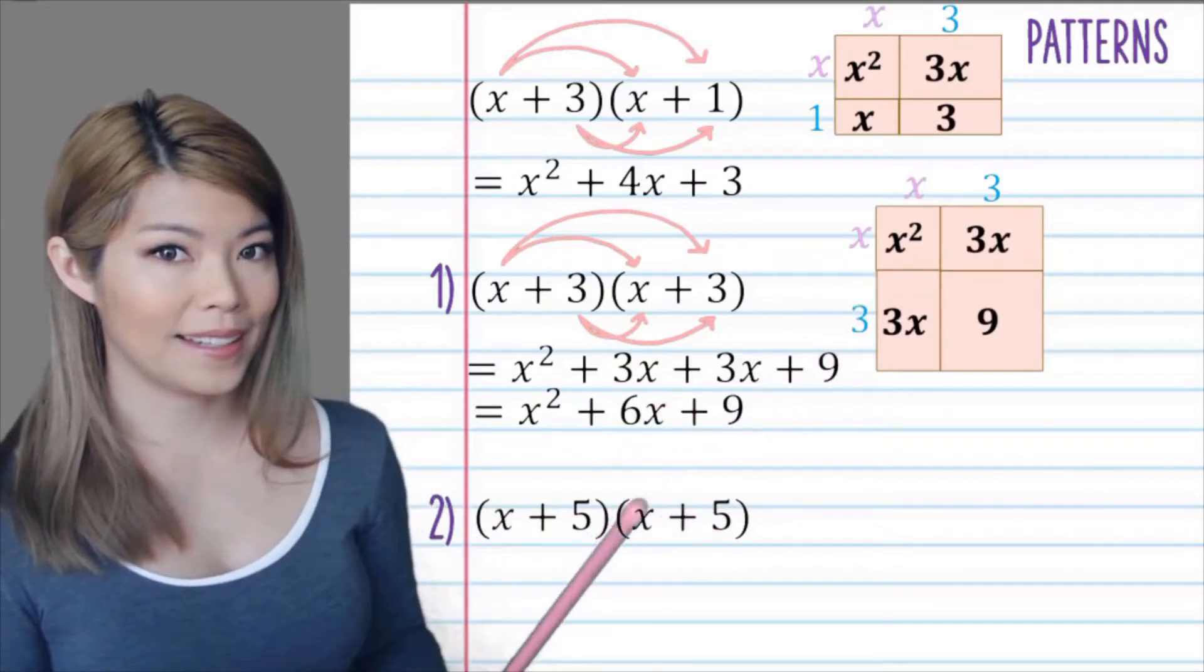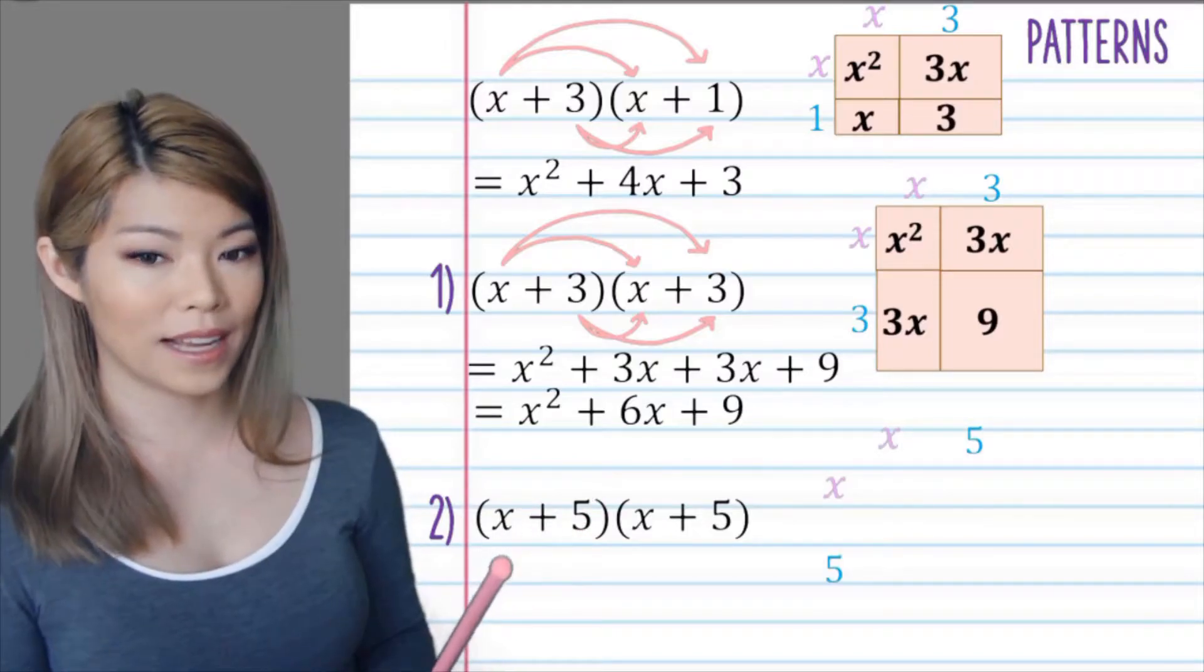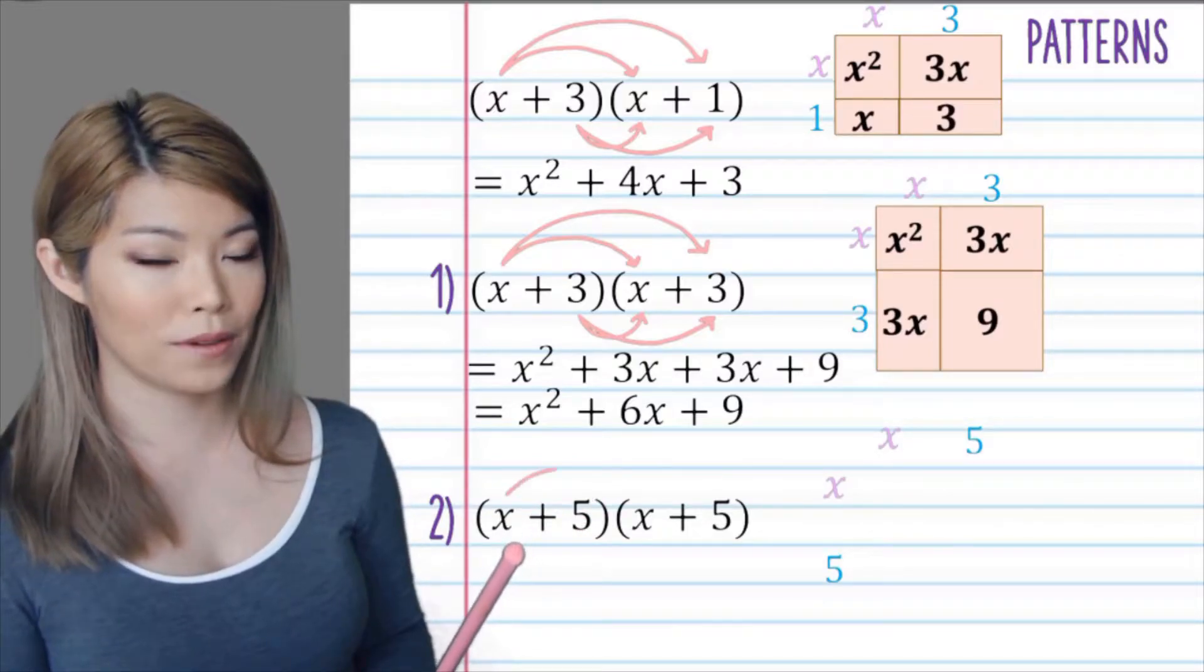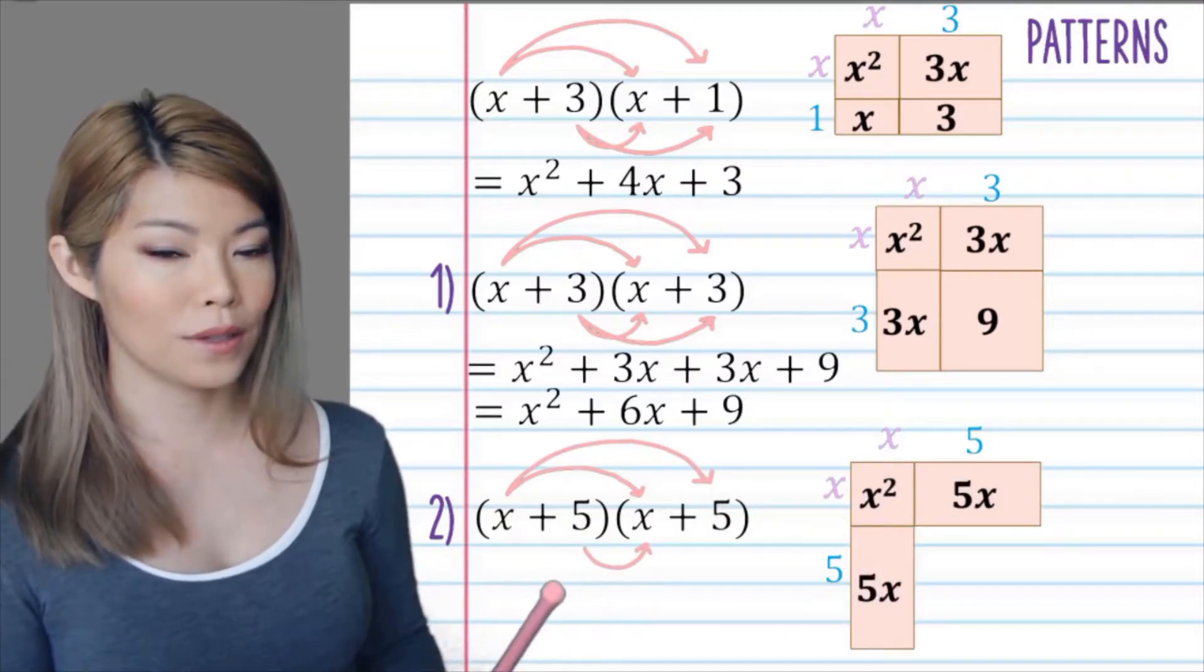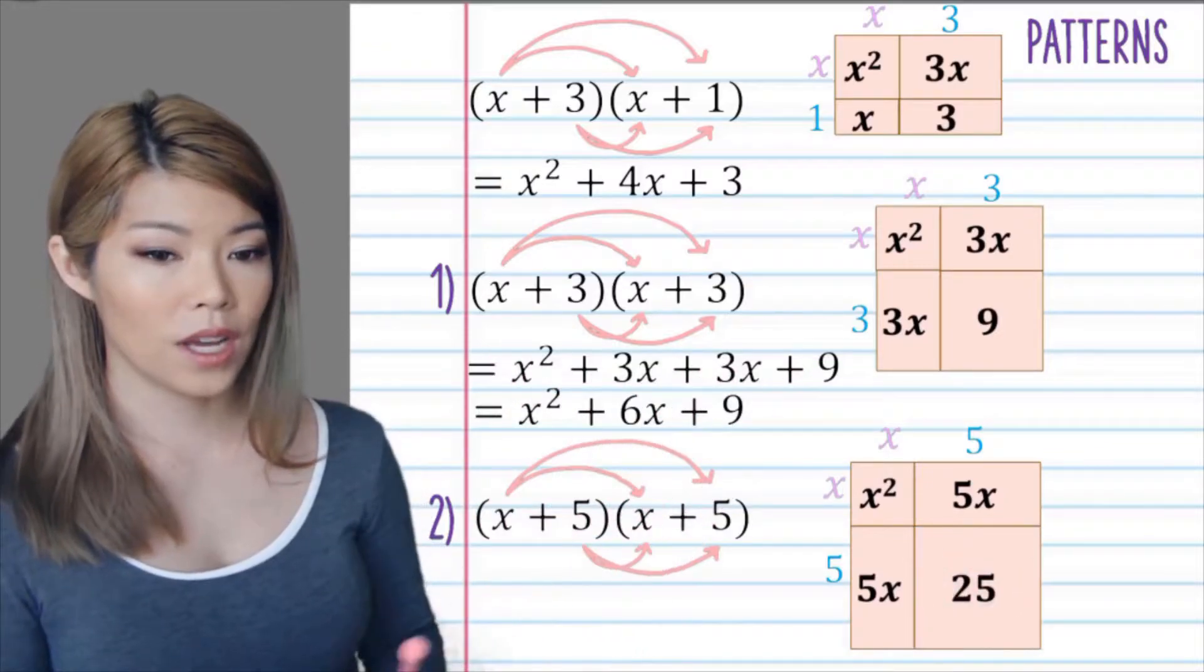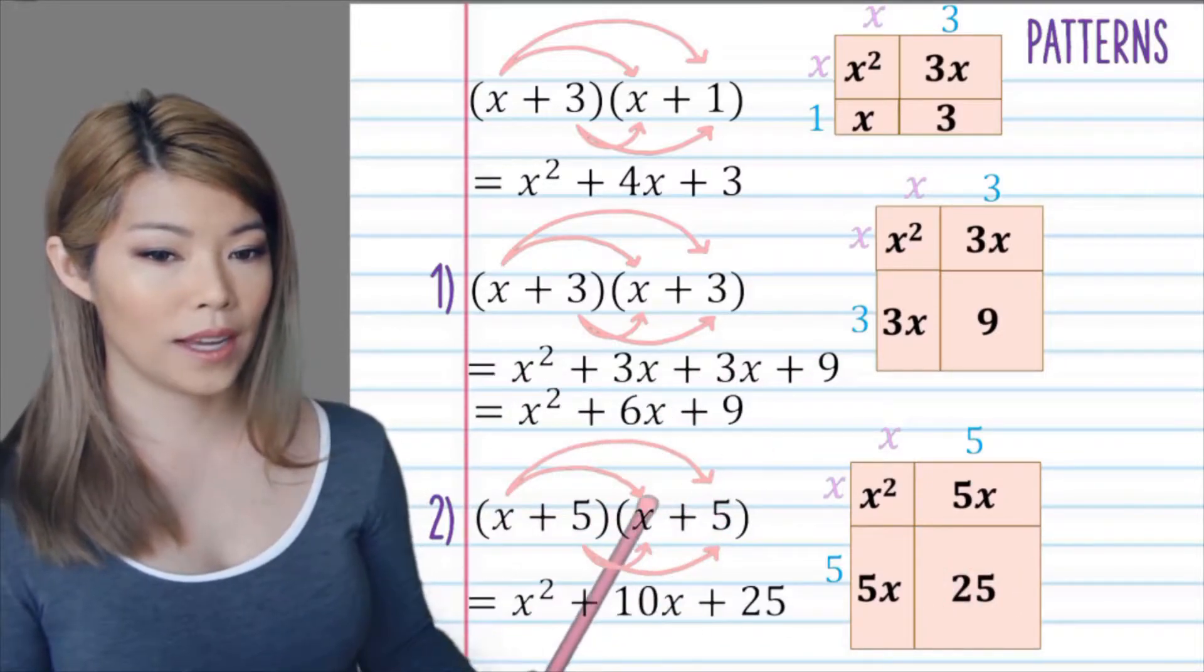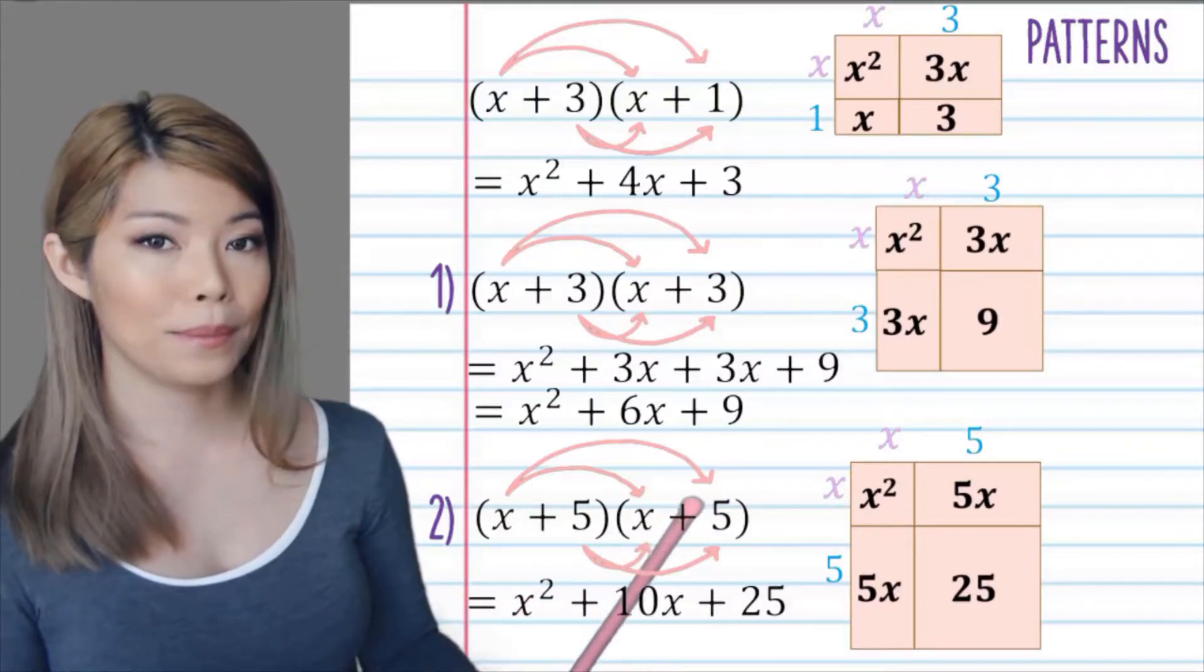So the middle two terms are the same and simplify to be 6x. What happens if we have x plus 5? Yes, indeed, the middle two terms are identical again, 5x and 5x. So instead of writing that middle line of working out, we can simply write x squared plus 2 times 5 times x, which is 10x, plus 25.